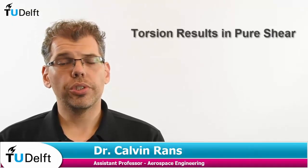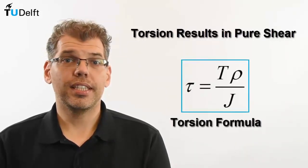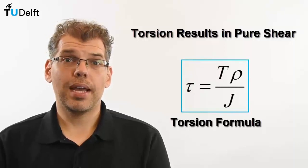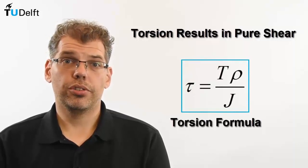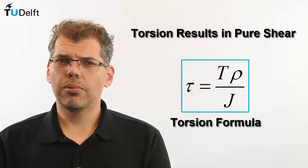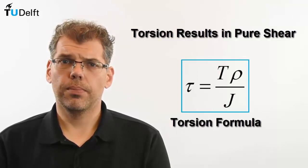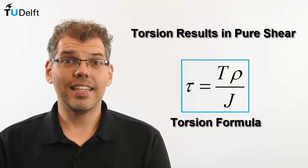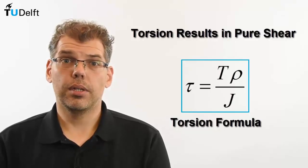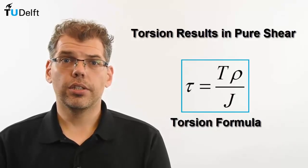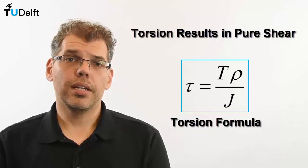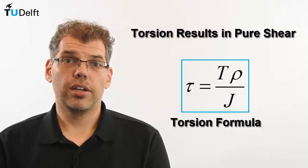In the previous videos, we established that torsion creates a state of pure shear within a circular shaft. We then derived the torsion formula that relates the internal torque to the magnitude of that shear stress. But how does the shaft deform, and how do we relate this to the internal torque? We have not quite looked at this, and it is needed in order to solve statically indeterminate problems. So let's take a closer look at relating the internal torque to the deformation of a shaft.